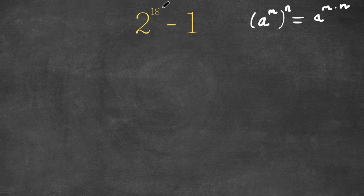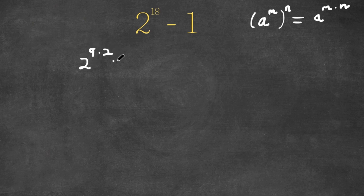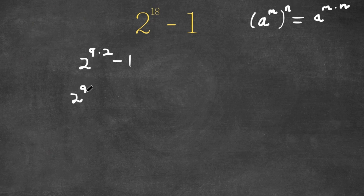So now we have 2 to the power of 18, and 18 can be written as 9 times 2. So this is 2 to the power of 9 times 2, minus 1. And remember, if we have something in the form a to the power of m times n, we can write this as a to the power of m to the power of n. So now we can write this as 2 to the power of 9, to the power of 2, minus 1.